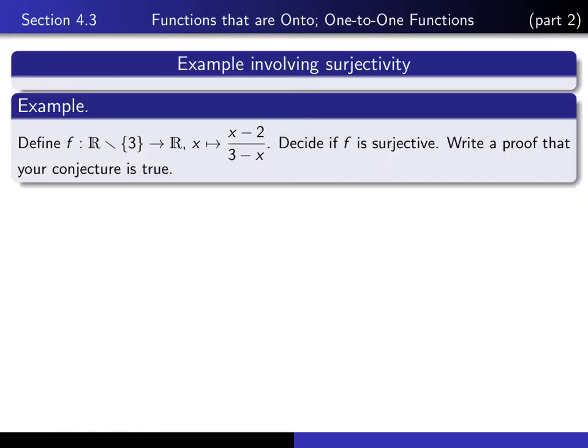Define the function f from the set of real numbers with the number 3 removed into the set of real numbers by f(x) equals (x minus 2) divided by (3 minus x). This denominator 3 minus x tells you why we don't want to allow 3 to be in the domain of this function. Now I want you to decide if f is a surjective function, and once you decide that, write a proof that your conjecture is true.